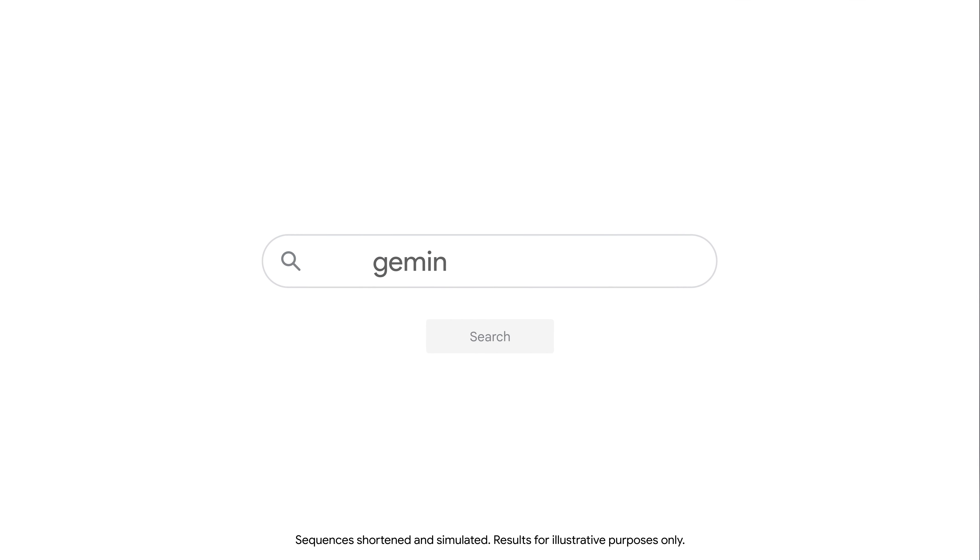To use Gemini, go to gemini.google.com. Sign in with a Google account. If you don't have a Google account, you can create one for free by clicking create account. Once you're signed into your Google account, you can start providing Gemini with prompts.